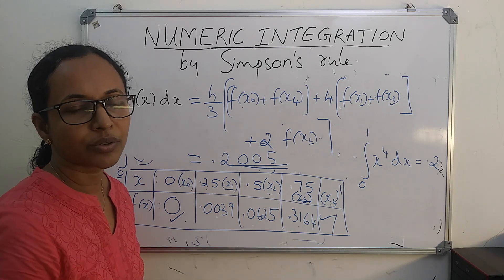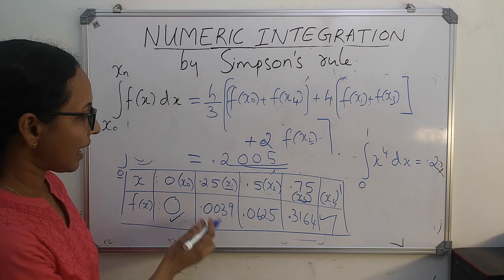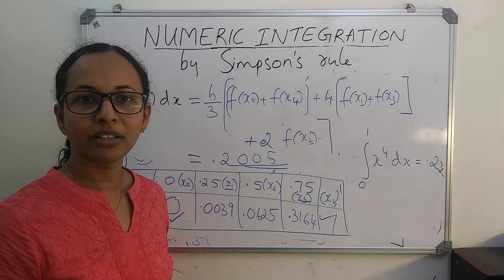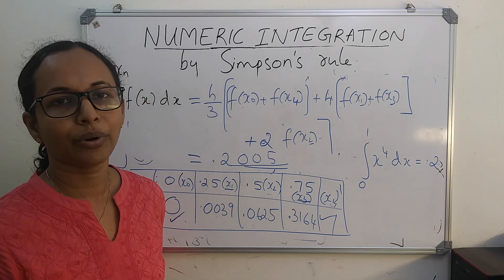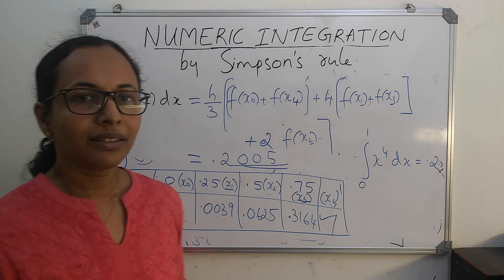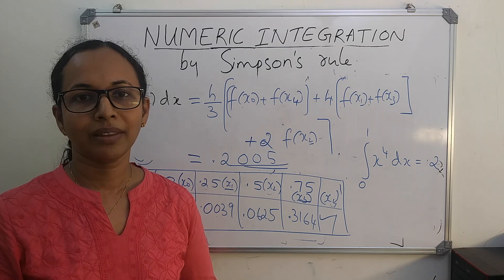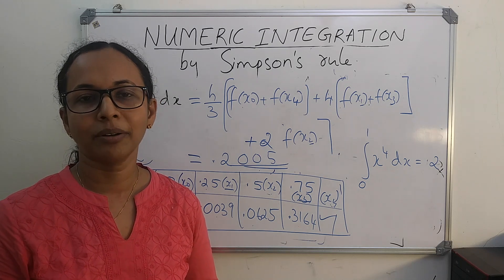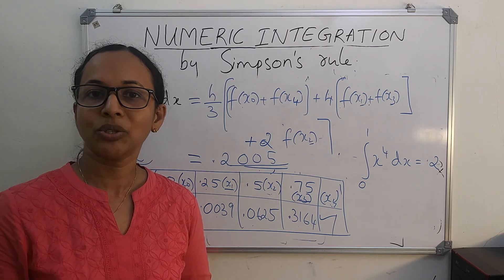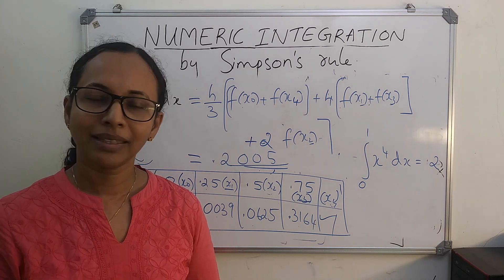If you want to reduce this error, you have to increase the number of subintervals. I have taken only 4 subintervals here. If you take 6, 8, or 10, you will get a more approximate value. The main thing to remember is, to apply Simpson's rule, n should be an even number. Also, compared to trapezoidal rule, Simpson's rule will give you more accurate value. Thank you.